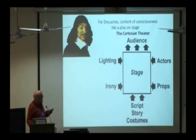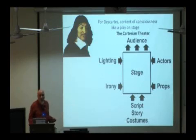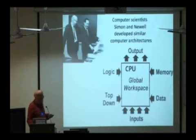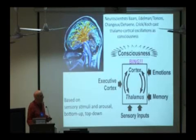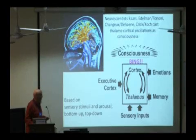Descartes made other contributions. He said that the contents of consciousness are like a play on a stage. We have inputs, scripts, story, props, actors, lighting onto a stage, which is then presented to the audience. So the problem is, who's the audience? For Descartes, it was the soul floating above the body. He was a dualist. In the 70s, computer scientists Simon and Newell developed similar computer architectures where you had various inputs into a global workspace or CPU that then presented outputs to a monitor. In the 80s, neuroscientists including Bernie Baars, Edelman, Tononi, Shanzhou, Dehaene, Crick and Koch cast thalamocortical oscillations as this Cartesian theater with sensory inputs, memory coming down from executive cortex into this thalamocortical system, which then somehow produced consciousness based on sensory stimuli and arousal, bottom up and top down.